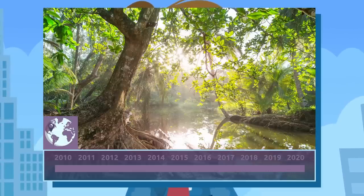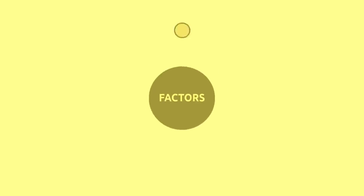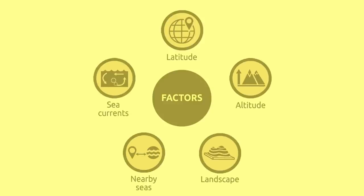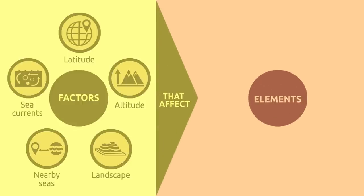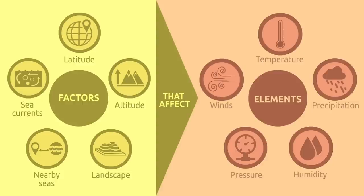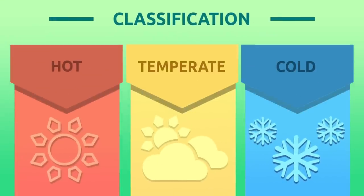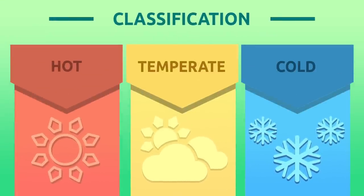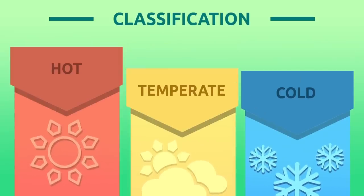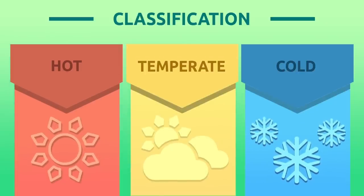The factors that affect the climate are latitude, altitude, landscape, nearby seas, and sea currents. Because of these factors, the elements that make up climate — temperature, precipitation, humidity, and winds — vary from place to place. There is a big variety of climate types on earth, each with its own characteristics. We can divide them into hot, temperate, and cold climates.